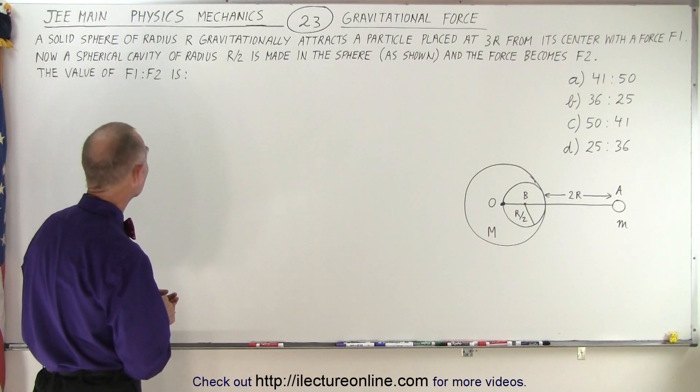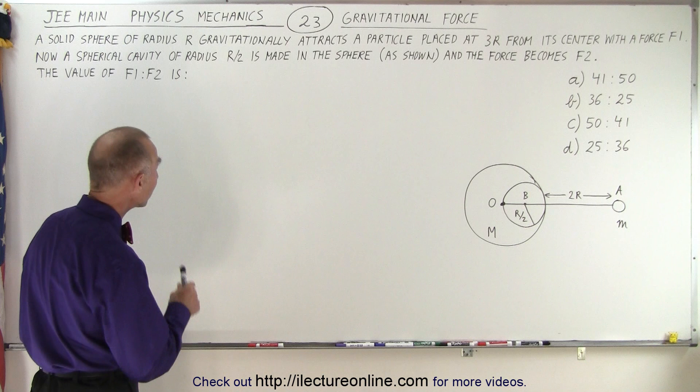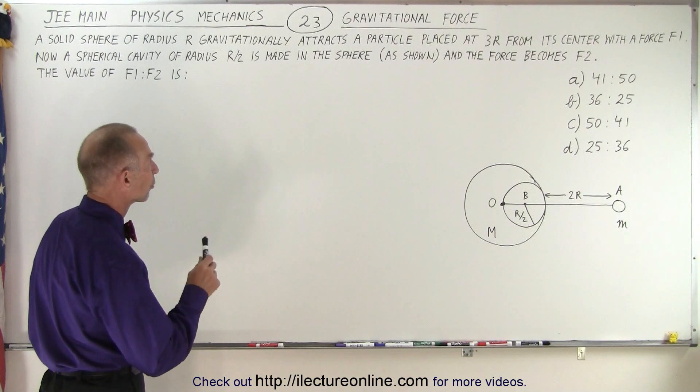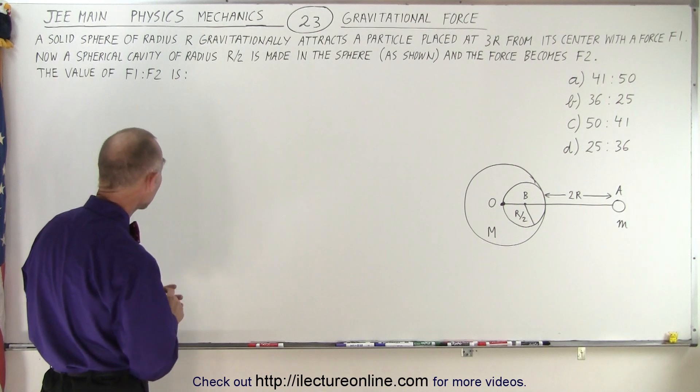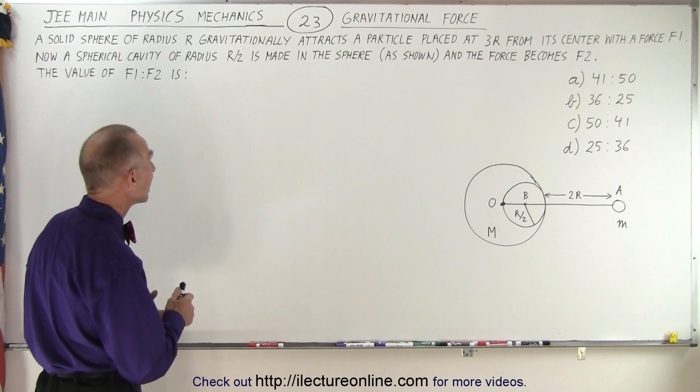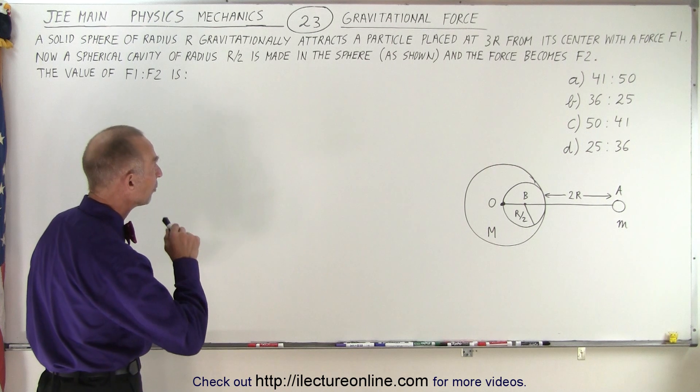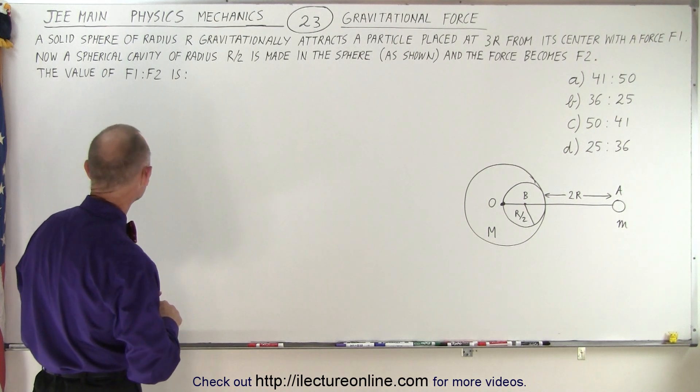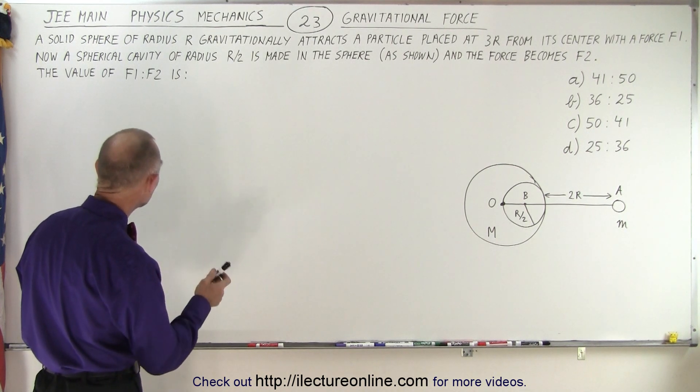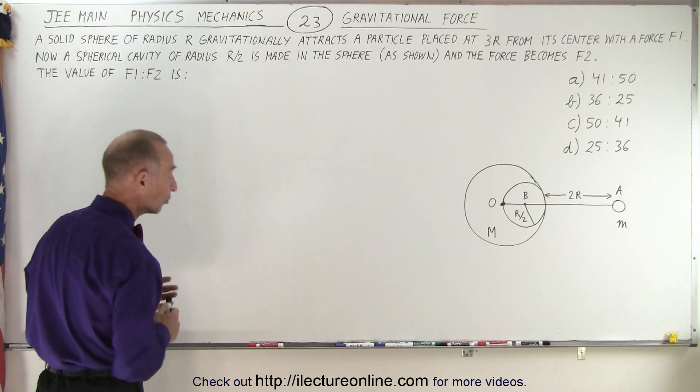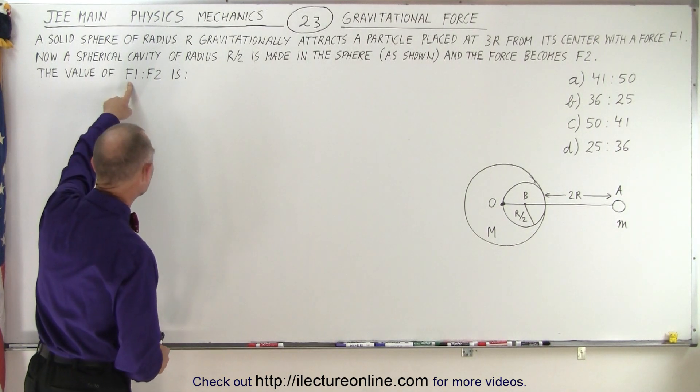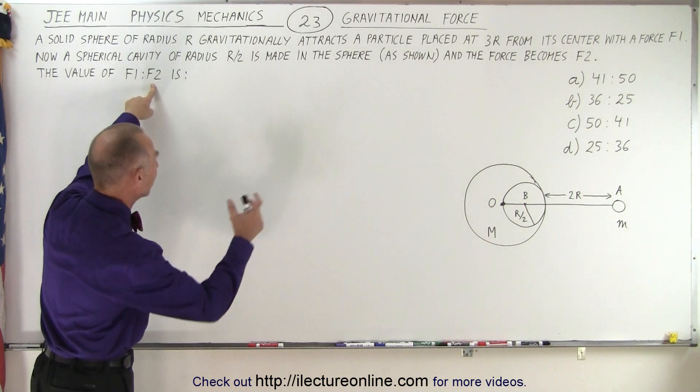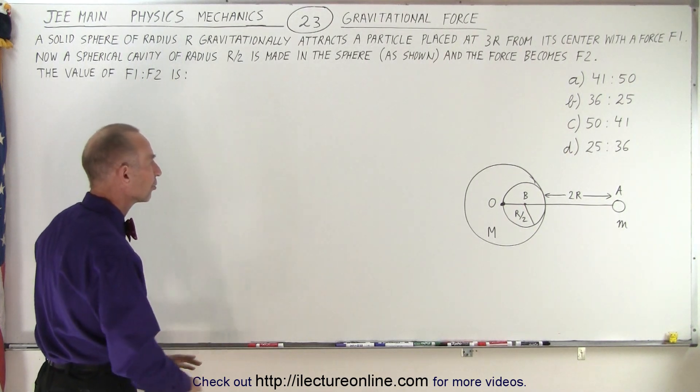A solid sphere of radius r gravitationally attracts a particle placed at 3r from its center with a force F1. Now a spherical cavity of radius r/2 is made in the sphere as shown and the force becomes F2. The value of the ratio of F1 to F2 is. So essentially they're asking for the ratio of the force initially to the force finally after a cavity has been made inside the original sphere.